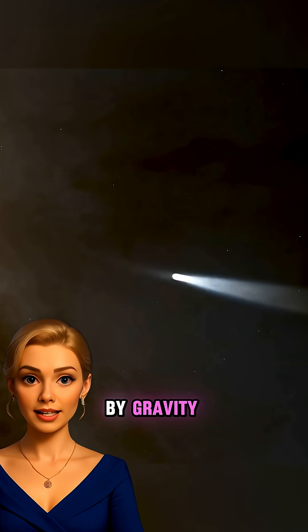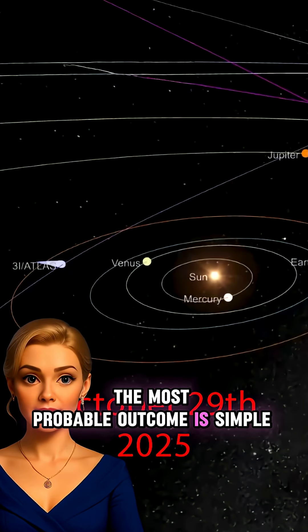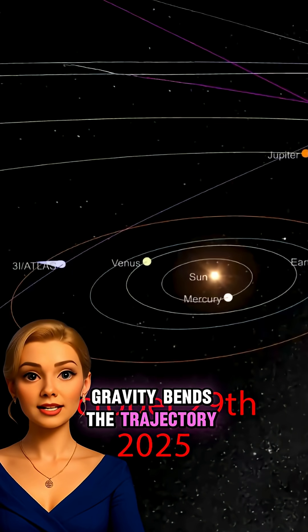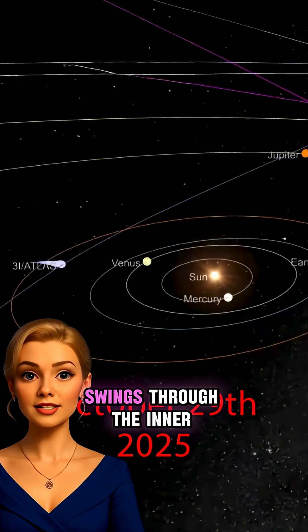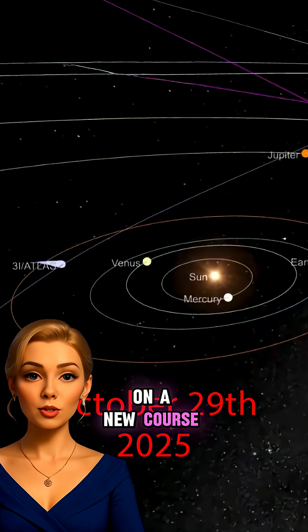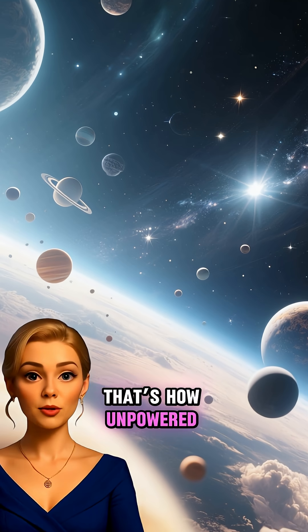It followed a path set by gravity. The most probable outcome is simple: it keeps going. Gravity bends the trajectory. Three-Eye Atlas swings through the inner solar system and then heads back out on a new course. That's how unpowered objects behave.